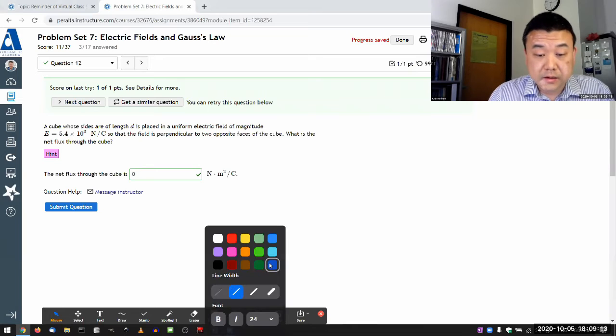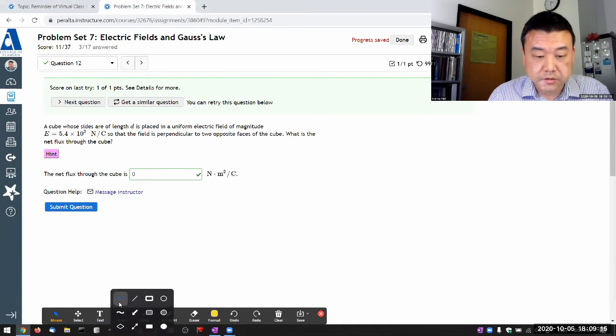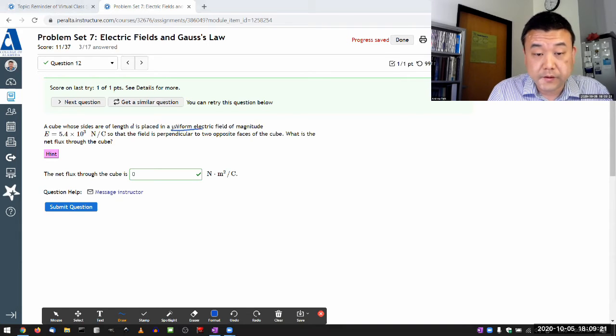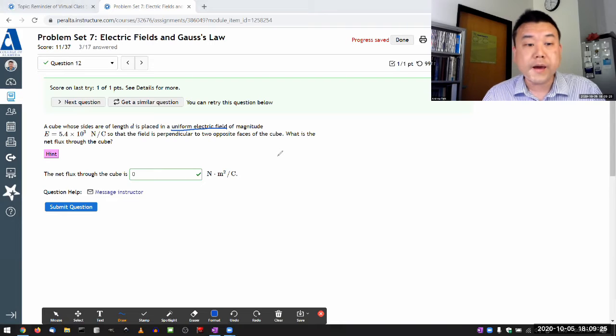So let me just take a couple minutes to describe why when you have uniform electric field, that would almost lead you automatically to say, yeah, the net flux through a closed surface is zero.